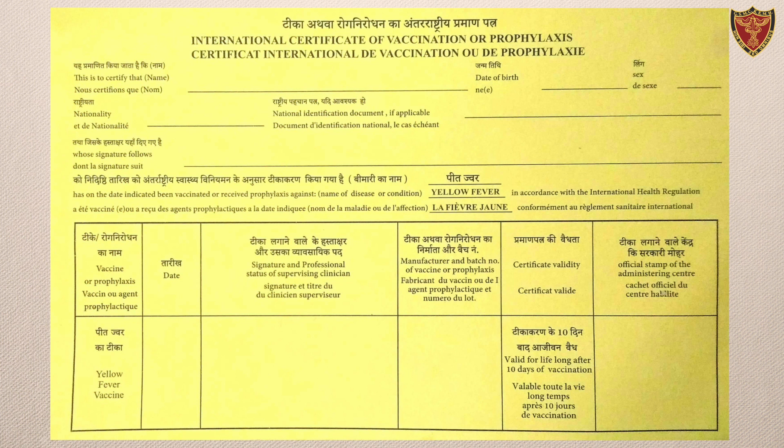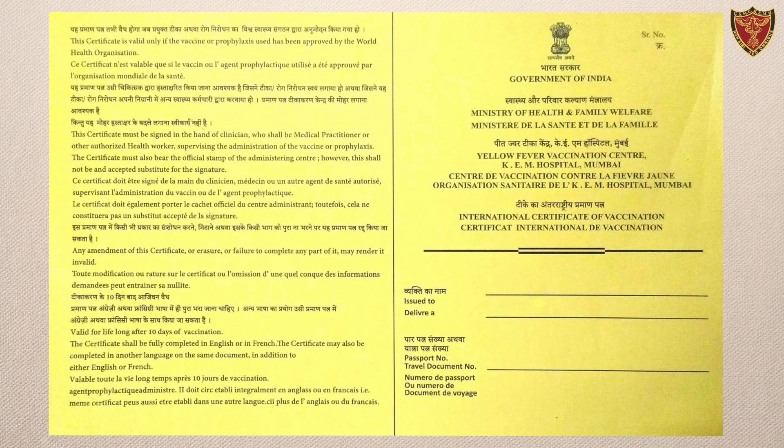The other columns on the certificate are for official purposes, wherein the date of vaccination is filled, the signature and professional status of the supervising clinician is entered, the manufacturer and batch number of the vaccine is entered, and the official stamp of the administering center is also marked on the certificate.